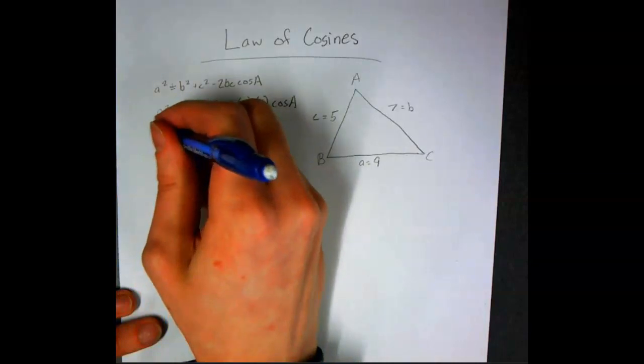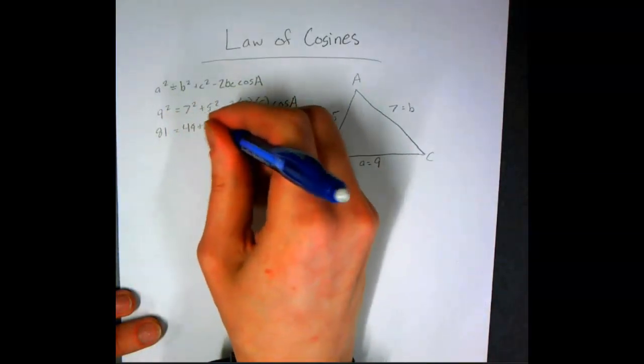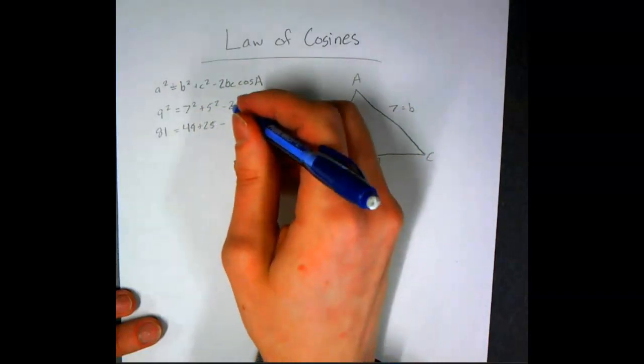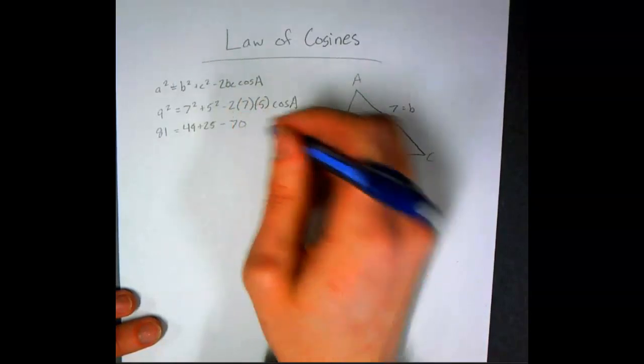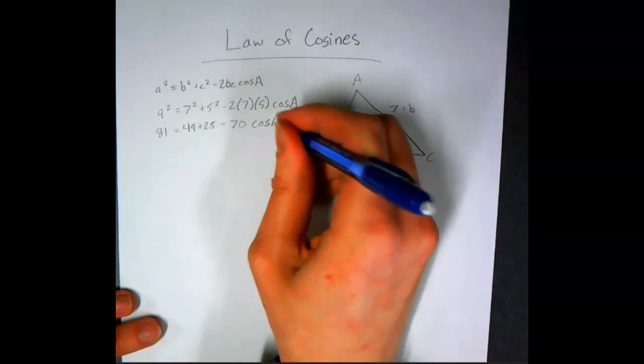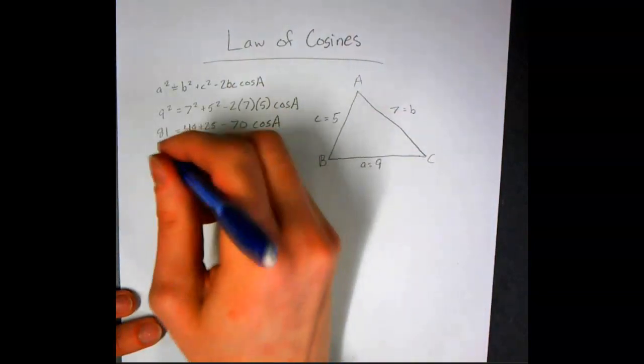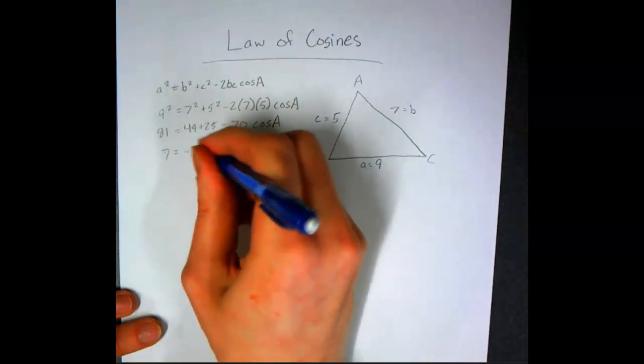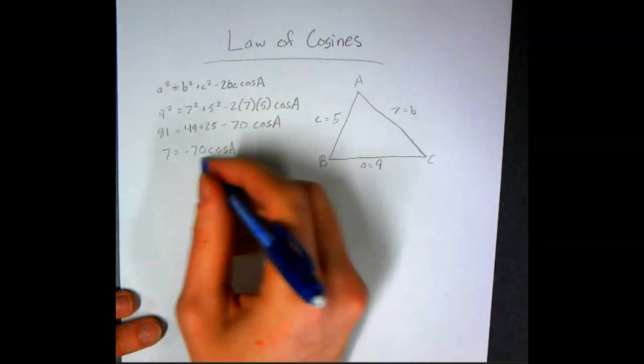This will be 81, 49, 25, and this right here will have the 2 times the 7 times the 5 is 70. We're going to subtract the 49 and the 25 over, and we'll have 7 equals negative 70 cosine a, divide by that negative 70.